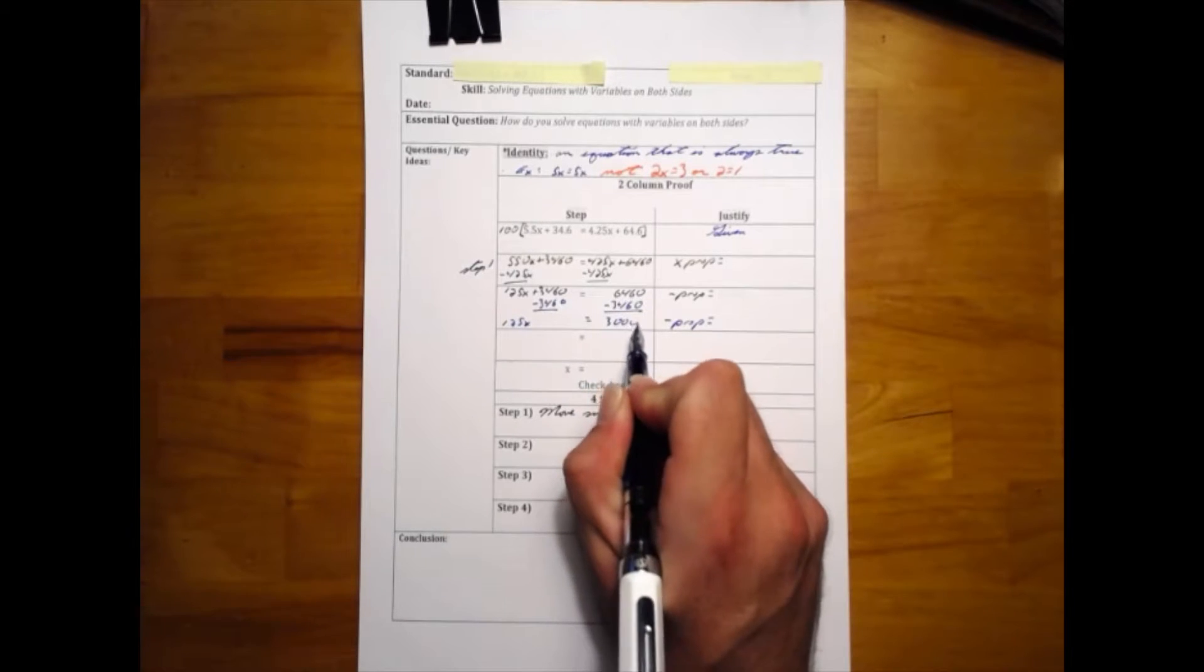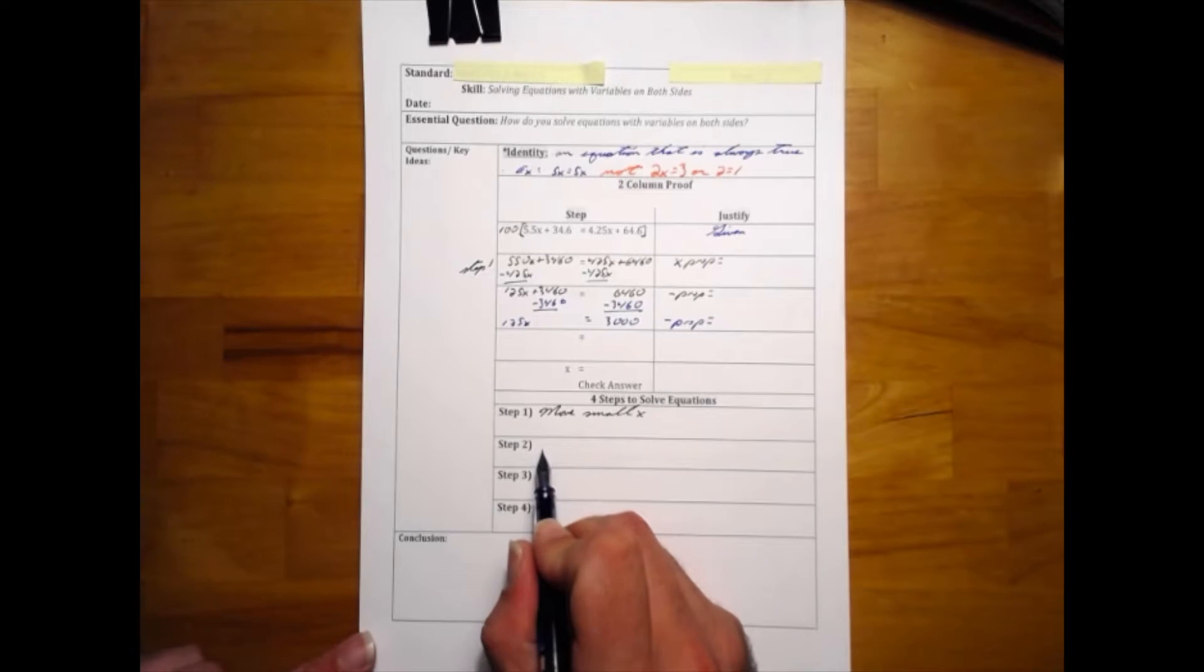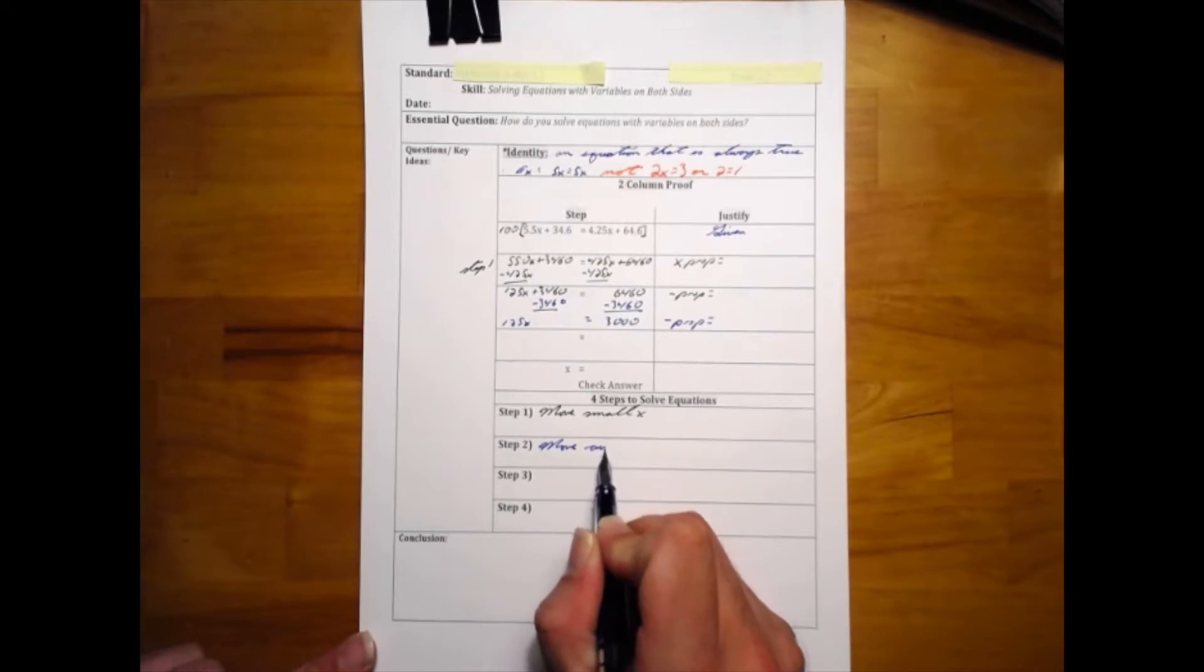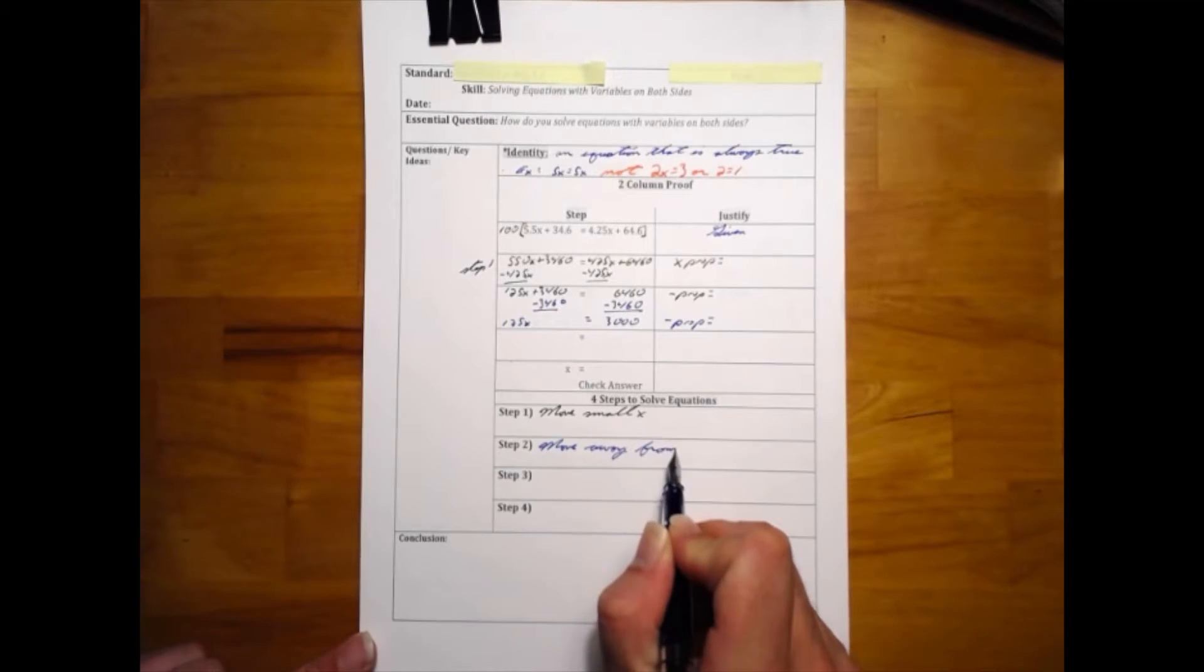We're going to make this our step two, which is to always move constants away from the x. Once we have only one variable, we want to leave it in place. That was the reason for moving the small one first—to try and always have a positive variable.